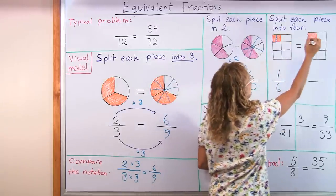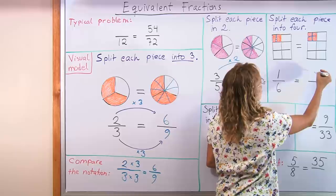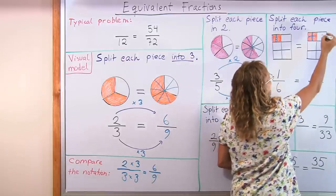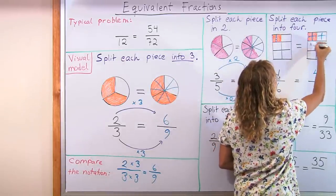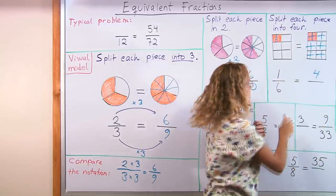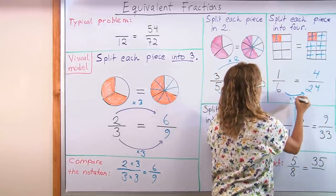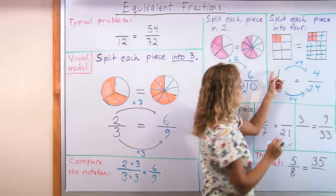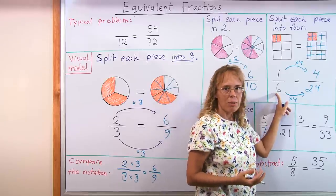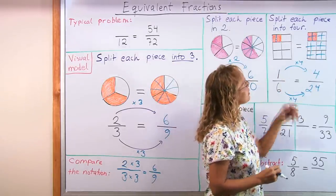Another example. Split each piece into four. This would be split into four new pieces. So we would have four colored pieces. And then, of course, these two. So we get four times as many pieces. 4 times 6 is 24. Both the numerator and the denominator get multiplied by four because there's four times as many pieces.